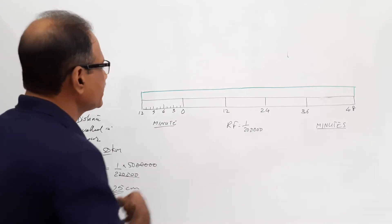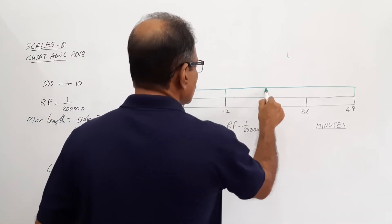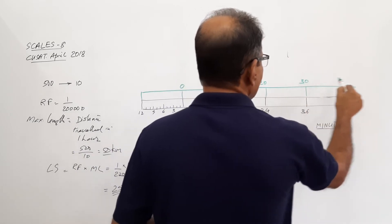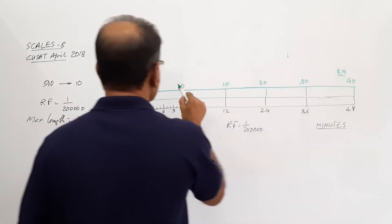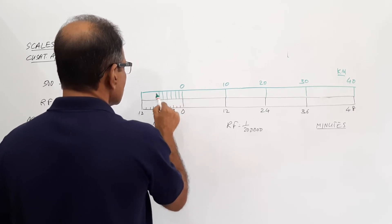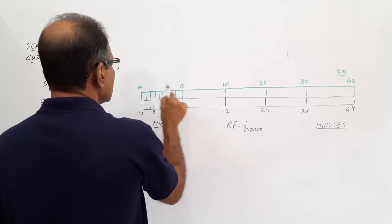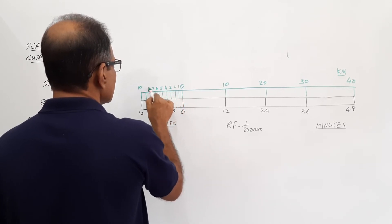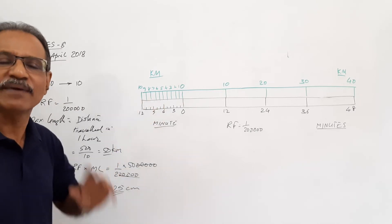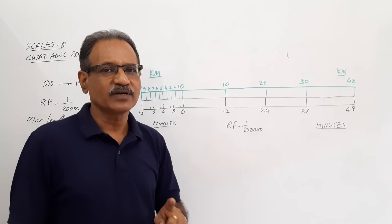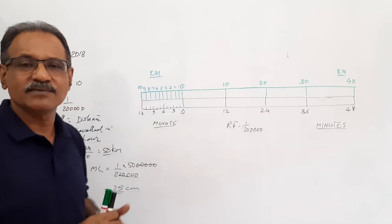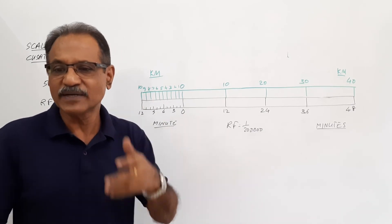50 kilometers is 25 centimeters. Divide it into 5 equal parts so that each division represents 10 km — marked 0, 10, 20, 30, 40. The unit is kilometers. Then divide the leftmost part into 10 equal parts so that each sub-division represents 1 kilometer. Now you have drawn a comparative scale — a scale with the same RF representing two different related units: kilometers and time. 50 kilometers is traveled in 1 hour, so the relation is established in the question itself.